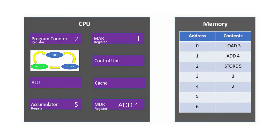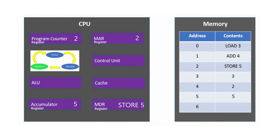The Fetch cycle begins again. The memory address register copies the new address from the program counter, which is 2. The control unit sends a signal to memory location 2, and the actual data is transferred to the memory data register. The control unit decodes the instruction by comparing it to the instruction set it has stored. The instruction is: store the contents of the accumulator at memory location 5. The control unit now executes the instruction and stores the contents of the accumulator at memory location 5.